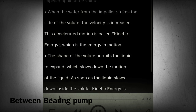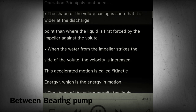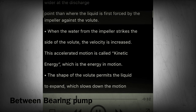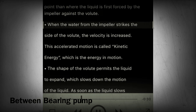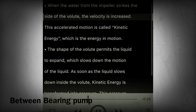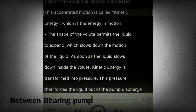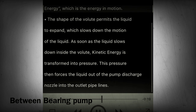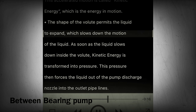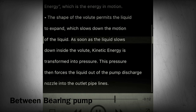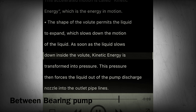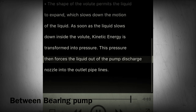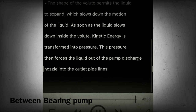Section 17 - Operating principles continued. The shape of the volute casing is wider at the discharge point than where the liquid is first forced by the impeller against the volute. When the water from the impeller strikes the side of the volute, the velocity is increased. This accelerated motion is called kinetic energy, which is the energy in motion. The shape of the volute permits the liquid to expand, which slows down the motion of the liquid. As soon as the liquid slows down inside the volute, kinetic energy is transformed into pressure, which then forces the liquid out of the pump discharge nozzle into the outlet pipelines.